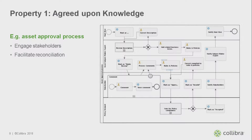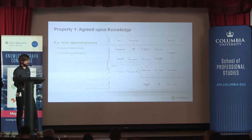Here you can see an asset approval process within the system. Someone proposes a certain business term, and then you have a bunch of stakeholders who are encouraged to engage and be part of reconciliating this knowledge. Someone proposes a business term, someone else says you've got to add a description, another person says they don't like the description and it should be something else. So everybody gets engaged so that we get to — this may be the wrong word — at least an agreed-upon and trustworthy data representation.